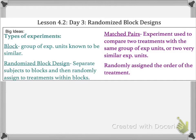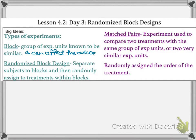Let's review the vocabulary. For types of experiments, a block is a group of experimental units that are known to be similar. We don't pick blocks for no reason — we pick them because they are similar in a way that can affect the outcome of the experiment. A randomized block design separates subjects into blocks and then randomly assigns treatments within each block.